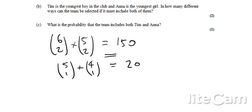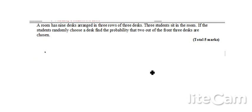And then the last bit, the probability that the team includes both Tim and Anna. Well, there's a number of ways in which Tim and Anna can be included. There's a total of 20 ways out of the total number of ways, which is 150.